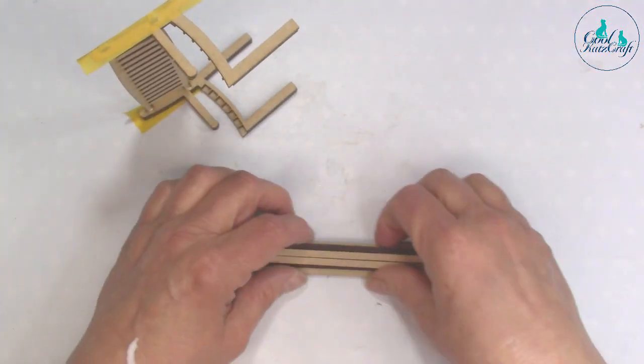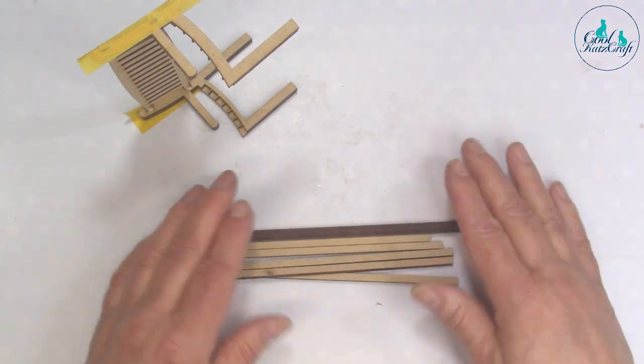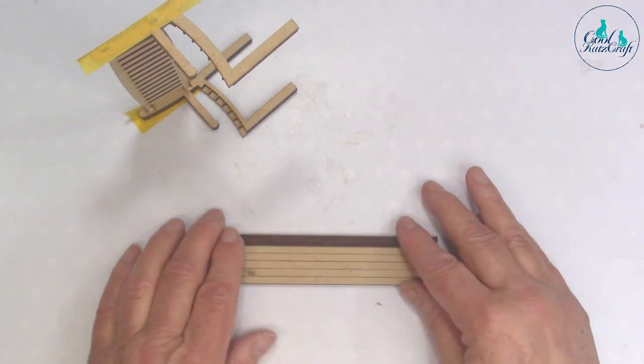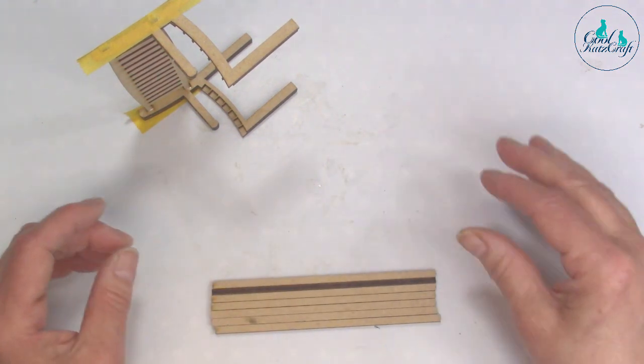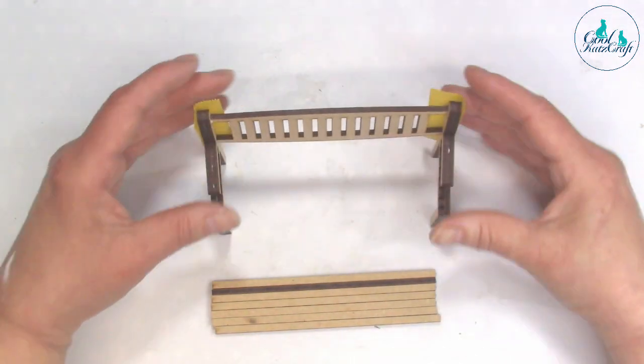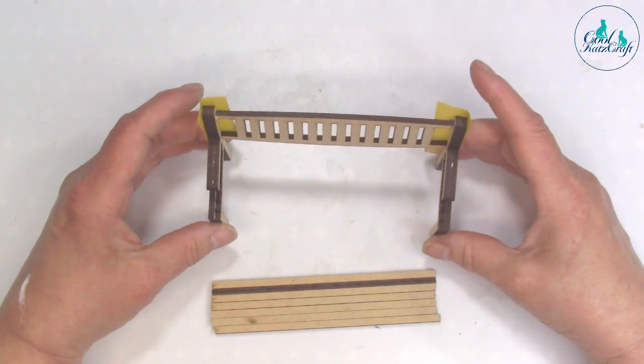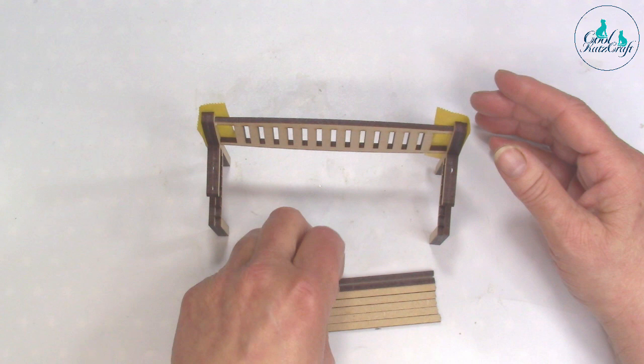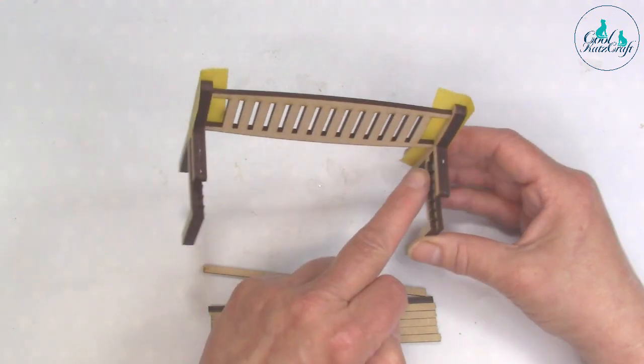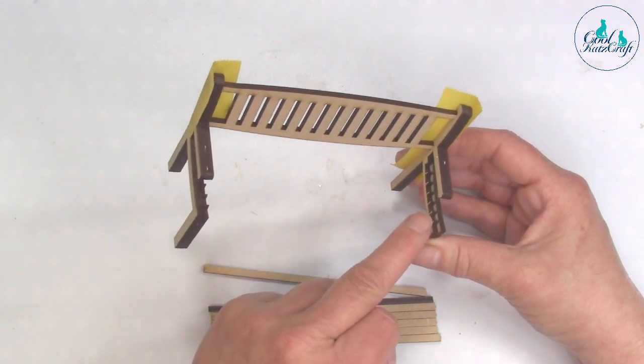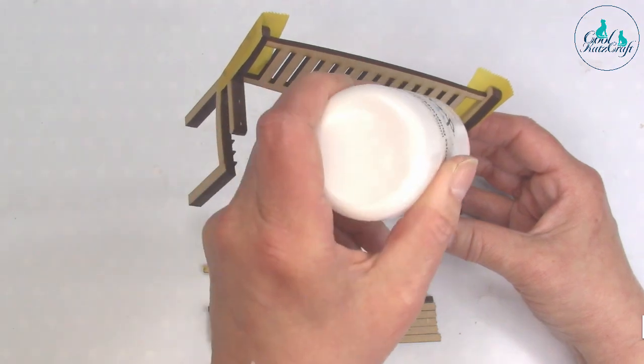These are your seat pieces - they're tabbed in so you can probably just push them out. If not, cut them out with a knife. What you'll do now is glue along those pieces on the inside, on both sides.